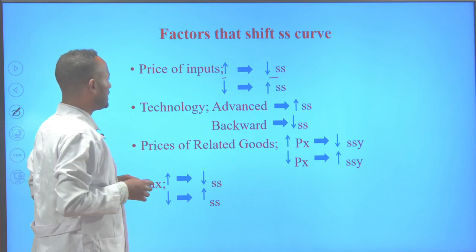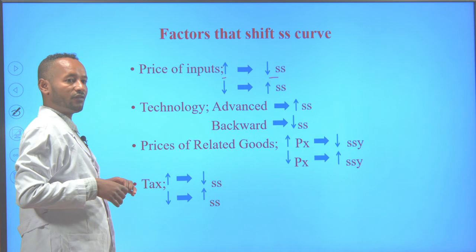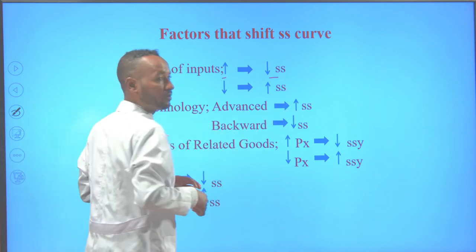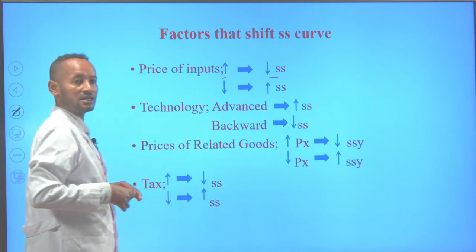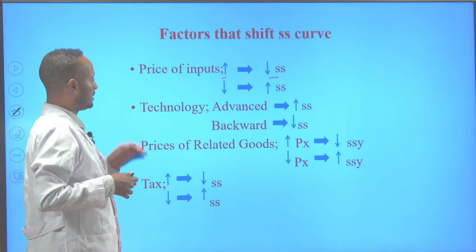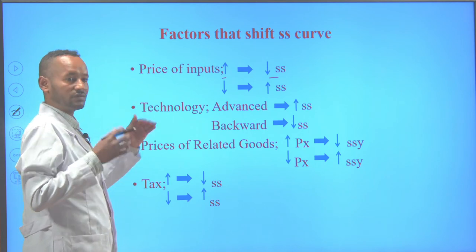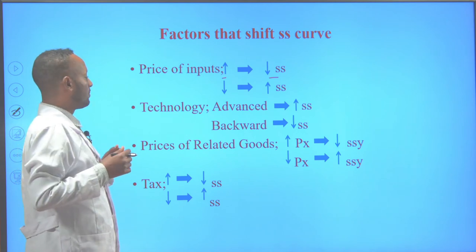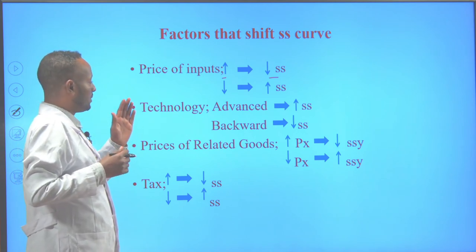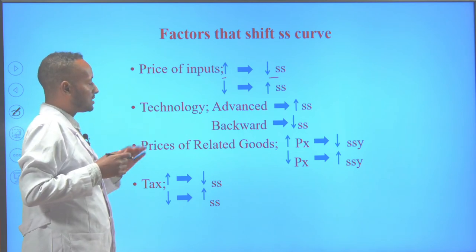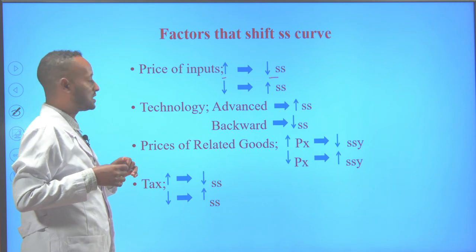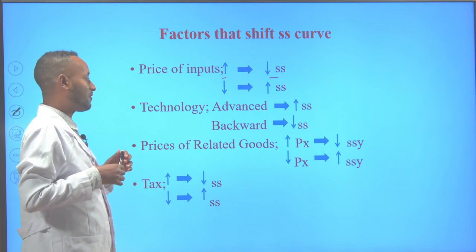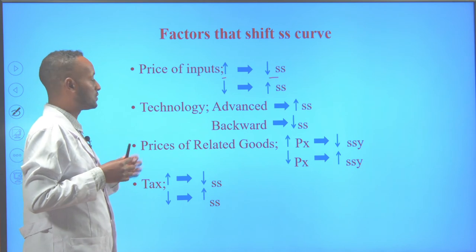Technology is another determinant. If firms employ advanced technology, then the supply for the commodity will increase and the supply curve shifts to the right. But if firms employ backward technology, the supply of the commodity will decline and the supply curve shifts to the left.